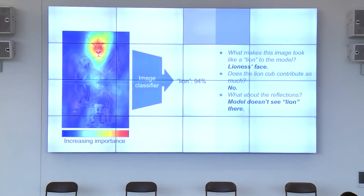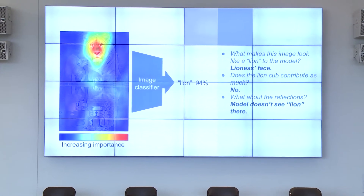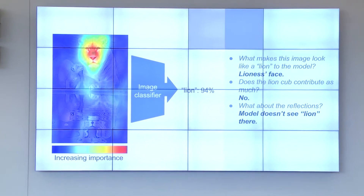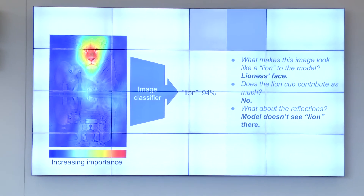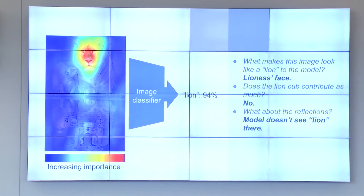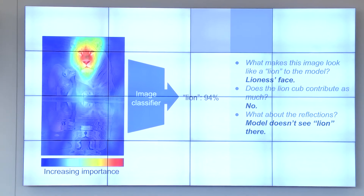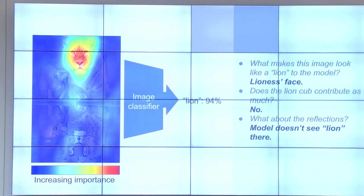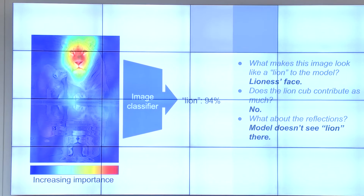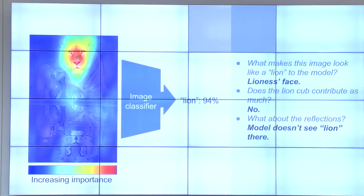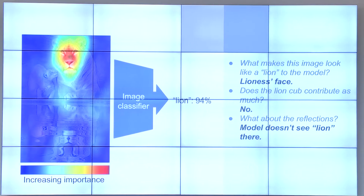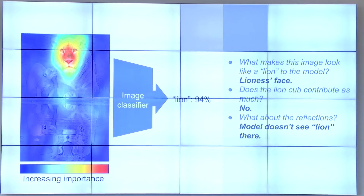Saliency maps are heat maps that visualize what areas of the image are more important to the prediction. For example, in this case, you can see that the lioness face contributes the most, and all the other parts such as the cap and reflection don't really matter that much.